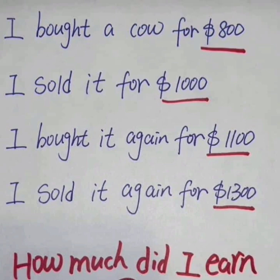Another way is to start from the biggest sale. Look at the second transaction first: you bought the car for $1,100 and sold it for $1,300 — a profit of $200. Now you have $1,300. Take out $800 from that money to buy the car for the first transaction, and you have $500 left.